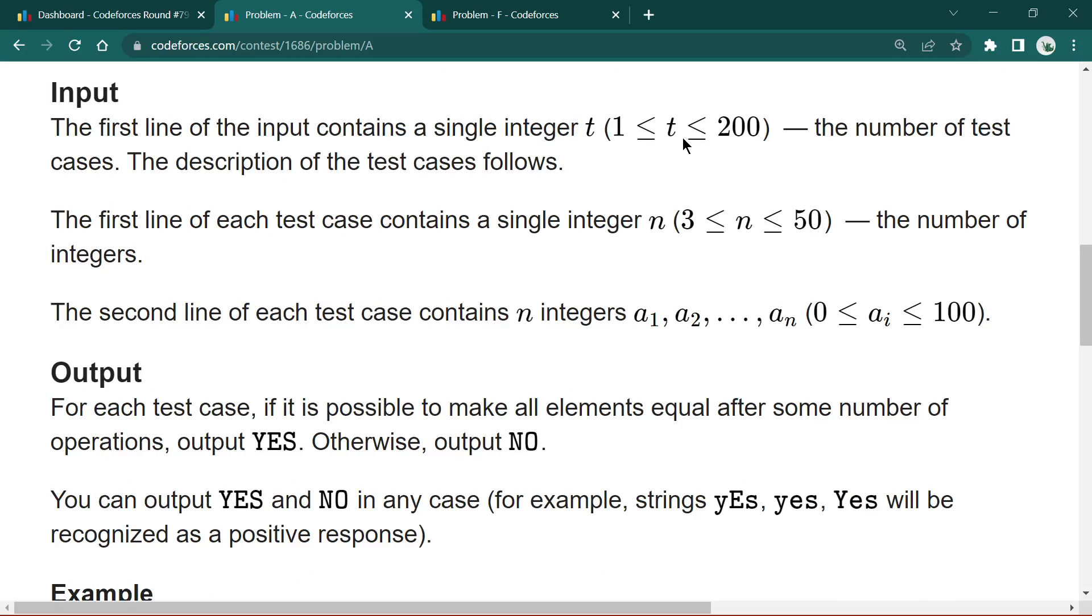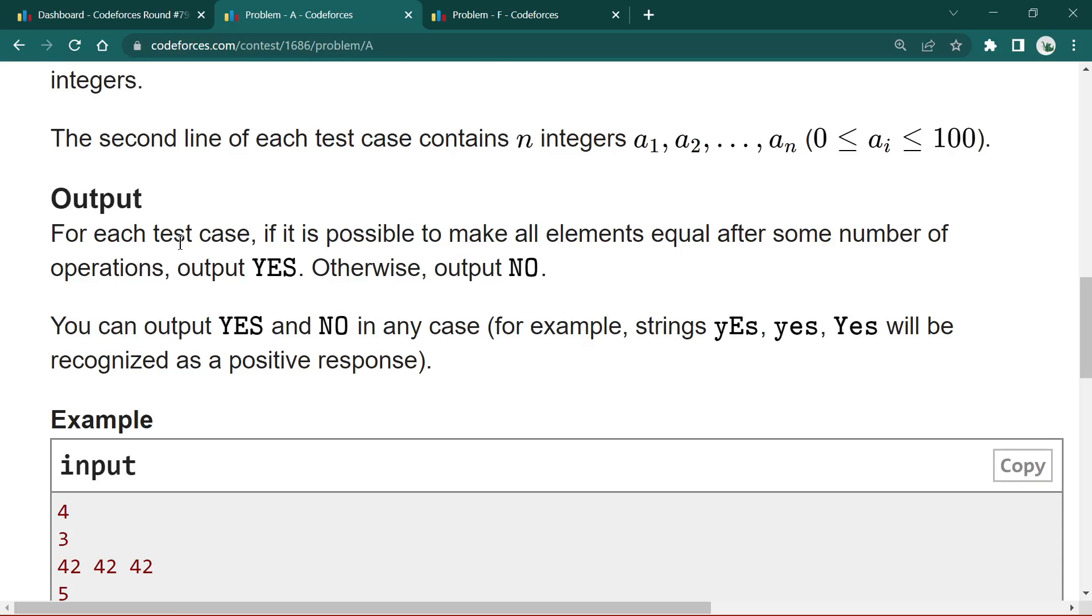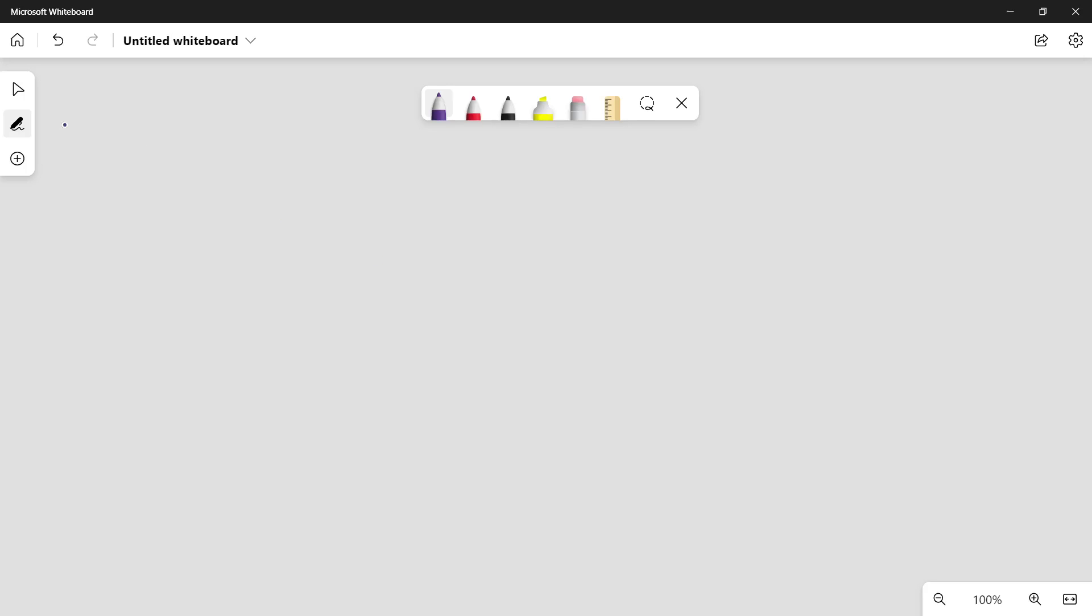This is the input case, which is t number of test cases ranging from 1 to 200. The first line consists of an integer n which is the size of the array, and the next line contains n integers, elements of the array. Output: whether it is possible to make all the elements the same, we'll print yes, otherwise we'll print no. This is the input. All the elements are the same, so in this case yes. Let's take another case.